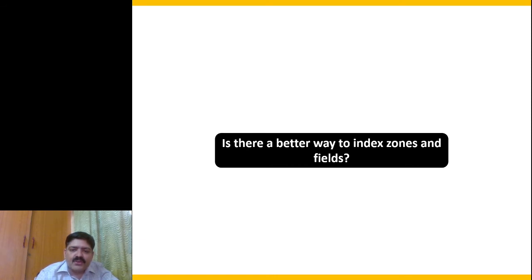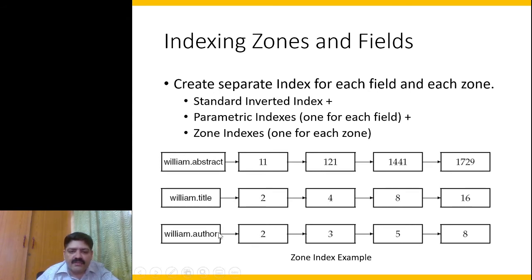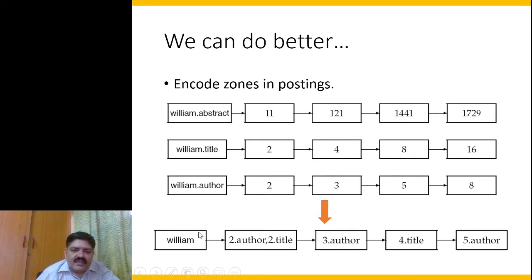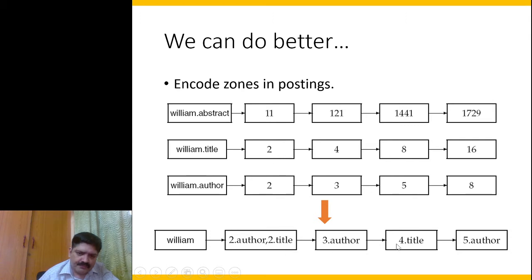Is there a better way to index zones and fields? The problem with the separate-index approach is that it uses too much space. One improvement is to have one single list for a term like 'William' which encodes all zone information together — for example, document ID 2 had 'William' in its author zone and also in its title zone. This combined representation is also useful for scoring.